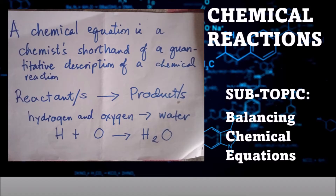The reactants are always written on the left side of a chemical equation and the products are on the right side. An arrow, a double arrow, or an equal sign usually separates the reactants from the product. A reactant is a substance used up during a chemical reaction, while a product is a substance formed after a chemical reaction.